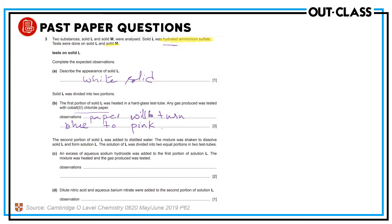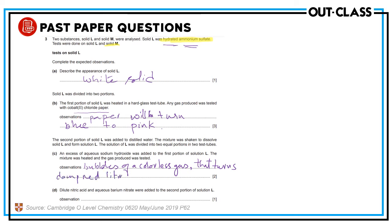The dissolved solution was divided into two portions. Excess sodium hydroxide was added to the first portion and the mixture was heated; gas produced was tested. It's an ammonium salt, so it contains ammonium ion. Ammonium ion with sodium hydroxide gives ammonia gas. Bubbles of a colorless pungent gas are seen, which turns damp red litmus blue. It is ammonia gas.